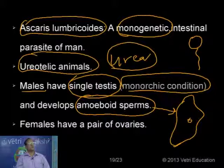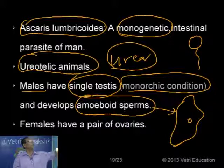Regarding the ovaries: there is a pair of ovaries in contrast to the single testis. The testis exhibits monorchid condition — presence of only one testis — while the female has two ovaries.